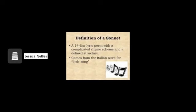A sonnet is a 14-line lyric poem written with a complicated rhyme scheme. Shakespeare wrote many sonnets, and one that we have read so far is the prologue of Romeo and Juliet.